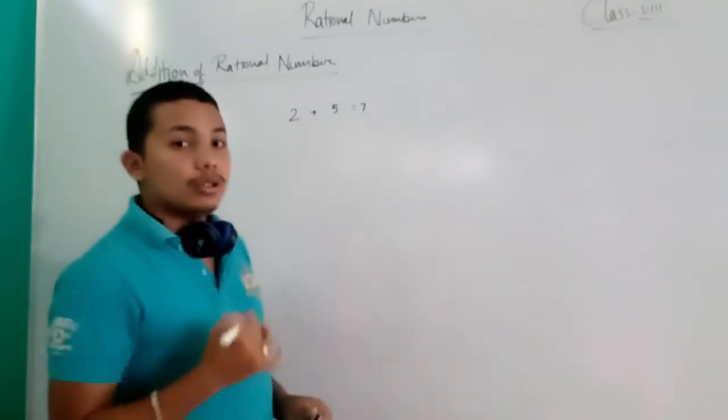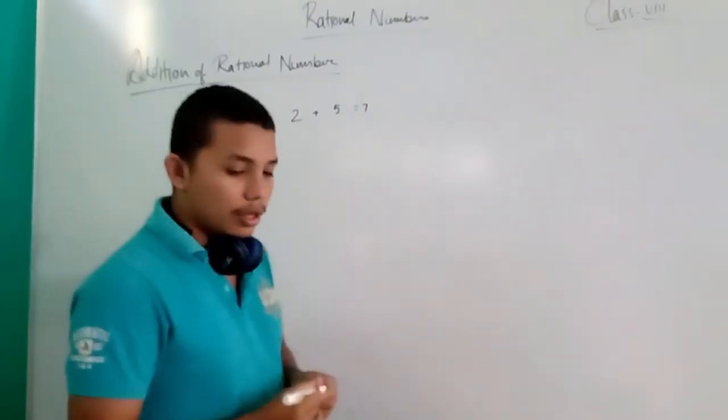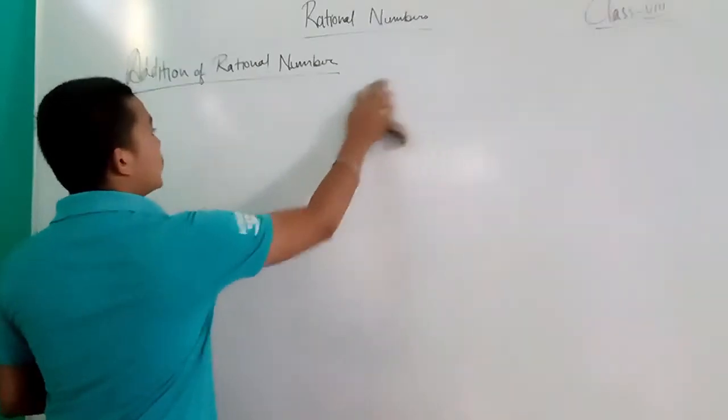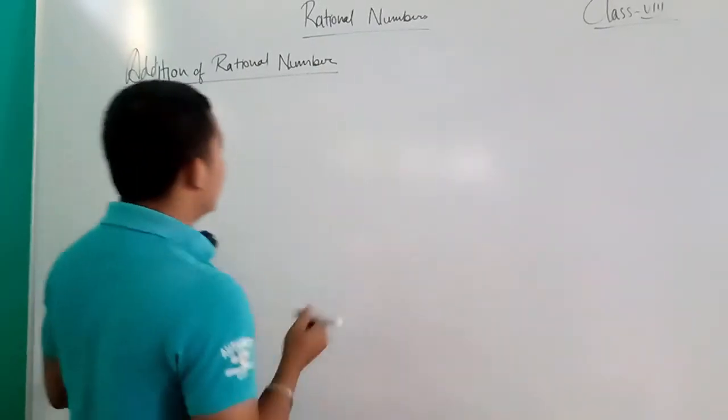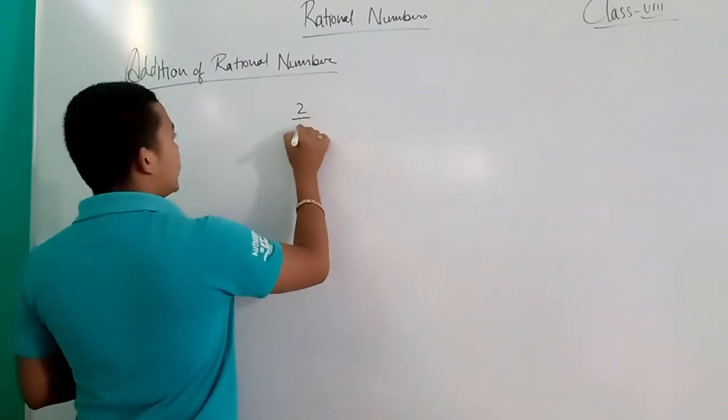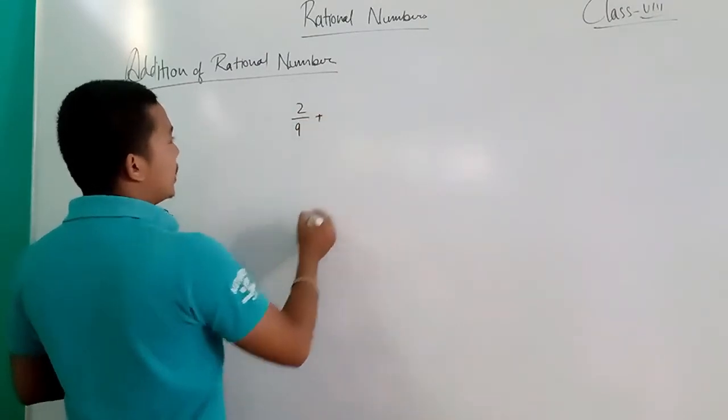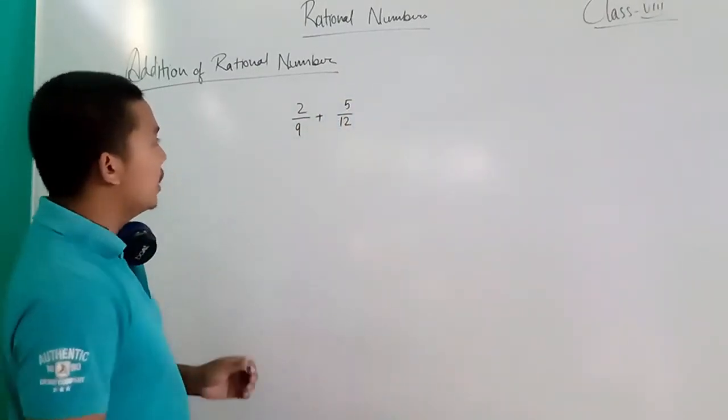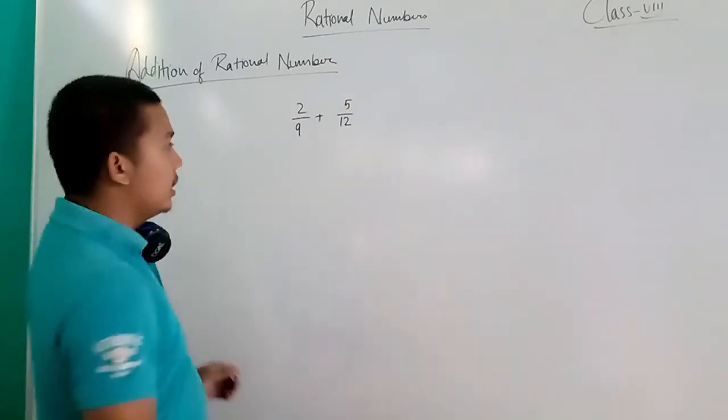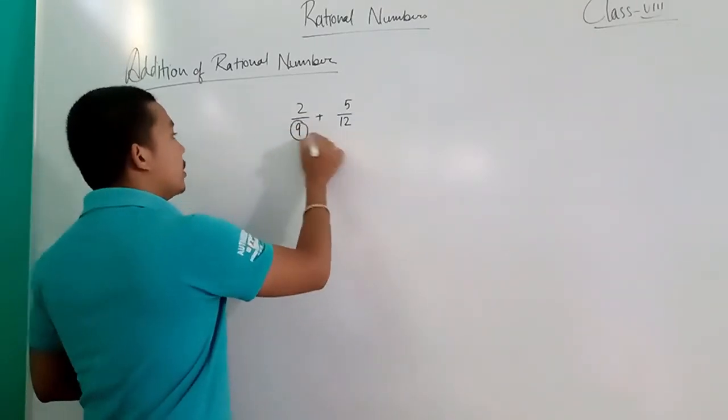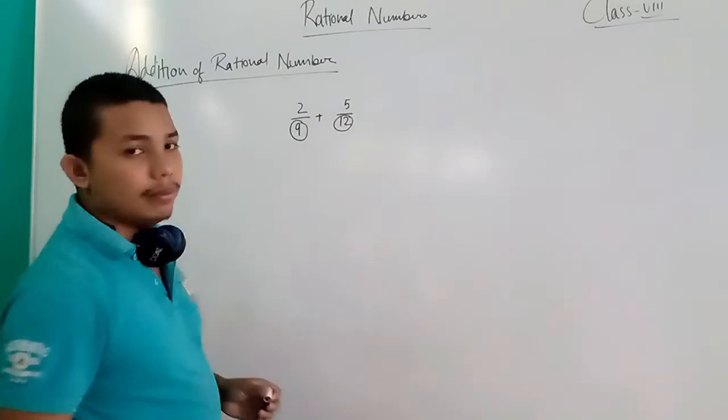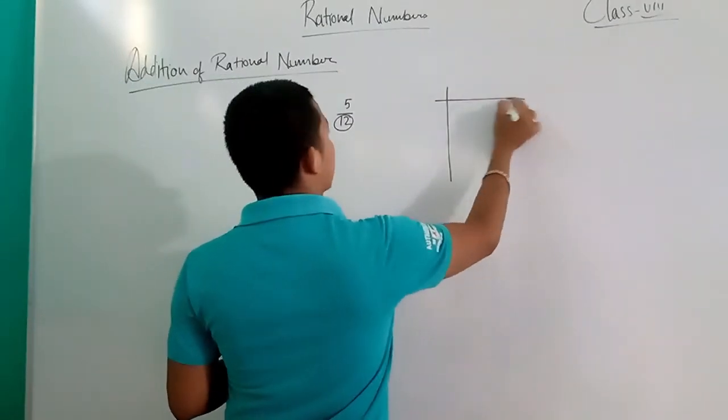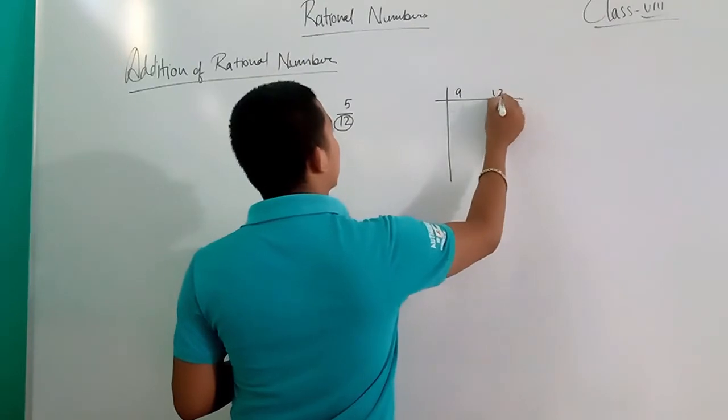Next question fraction: 2/9 plus 5/12. First of all, what is the denominator of the LCM? LCM: 9, 12.